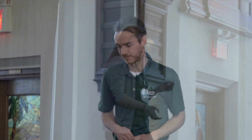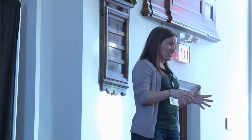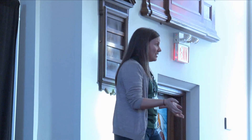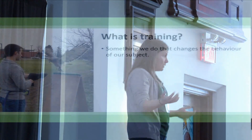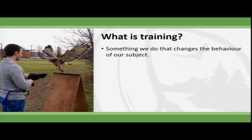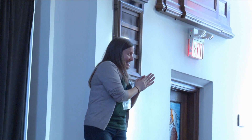So what is animal training? It's not as complicated as people think — it's actually much simpler. Animal training really is anything that we do that modifies the behavior of any animal. Pretty simple. Keep that in mind: anything we do that modifies the behavior of another animal, a human animal or otherwise.